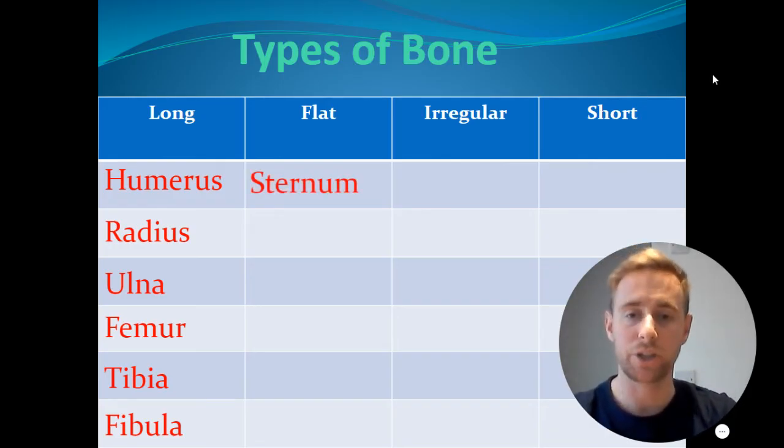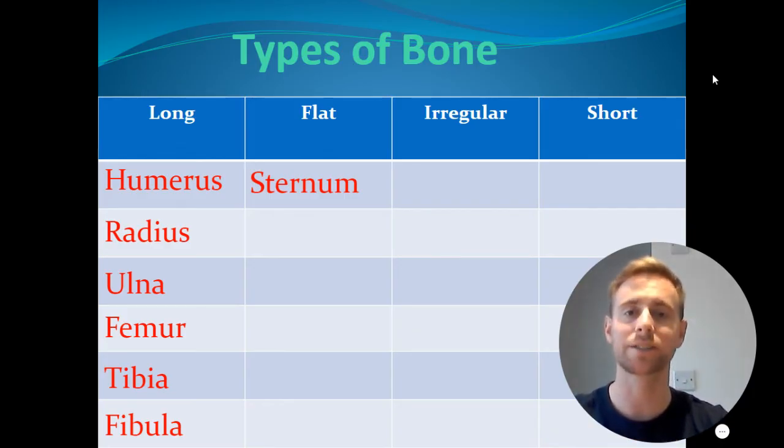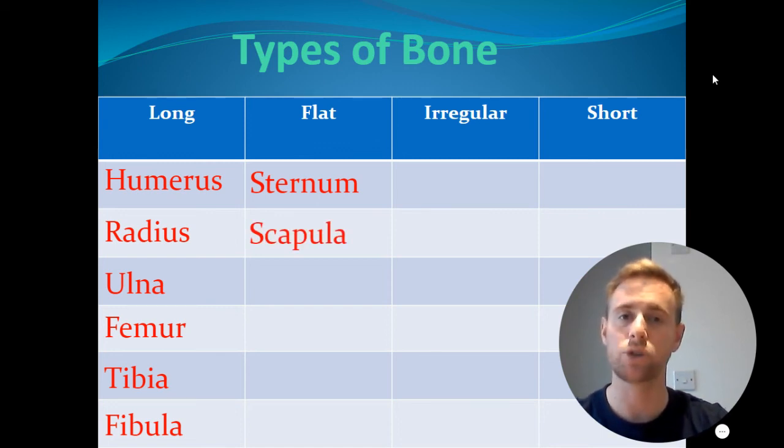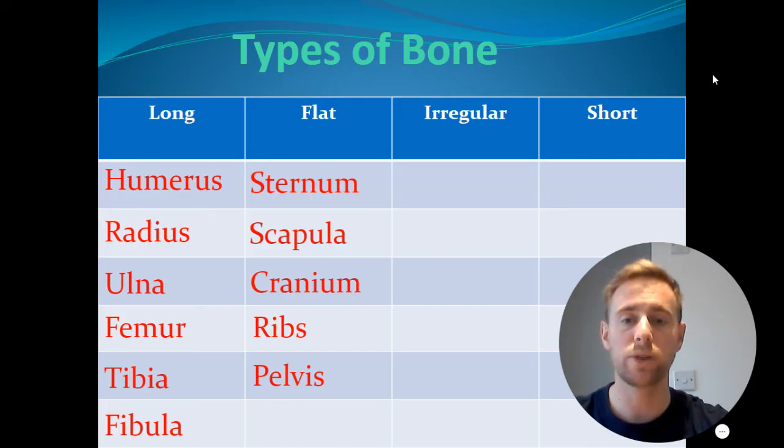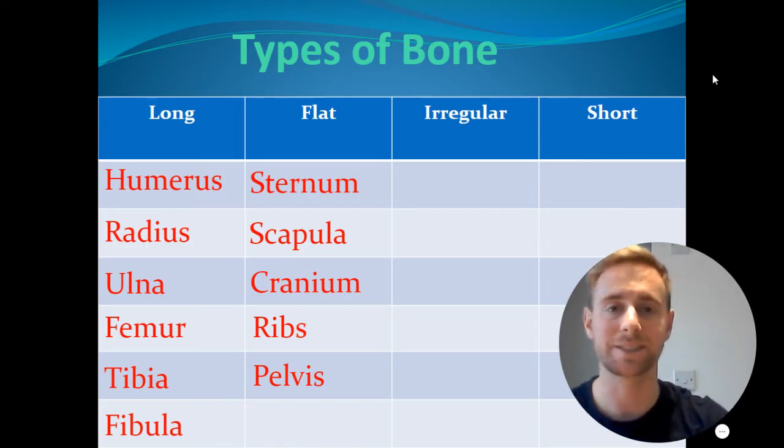Then flat bones, used for protection. We have our sternum, which is down the middle of our chest here, protecting our vital organs such as our lungs and our heart. We then have scapula doing the same job, but it's located on our back. We then have our pelvis, which protects our reproductive organs. We have our cranium, which protects our brain, and we have our ribs, which again protect our vital organs such as our lungs and our heart, same as the sternum and the scapula.